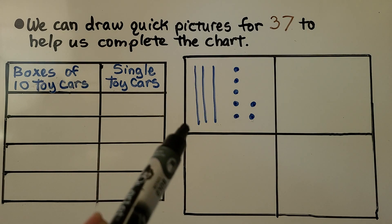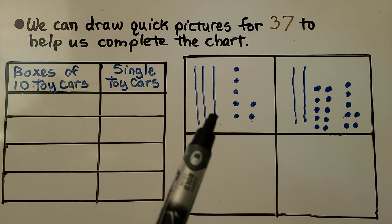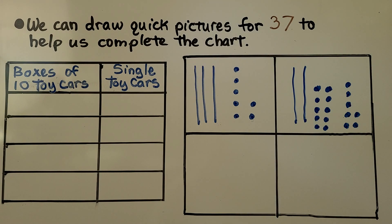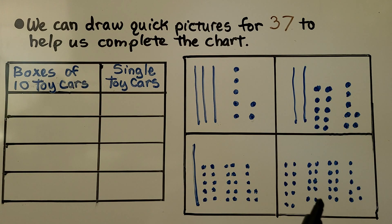Each long line represents 10 and each dot represents a 1. And we can trade one of these lines for 10 ones. We take away one of the lines and put 10 ones. We can take away another line and put another 10 ones. Now we have one 10 and 27 ones. And we can trade this last 10 for 10 ones. Now we have 37 ones.